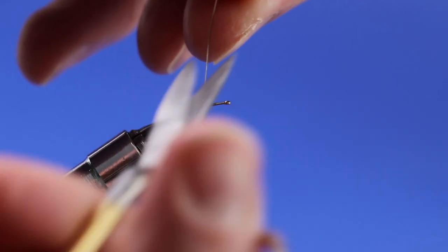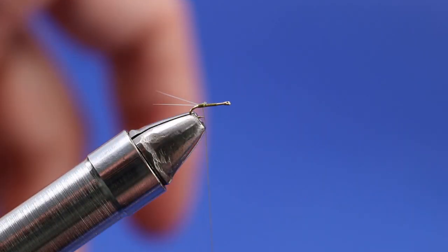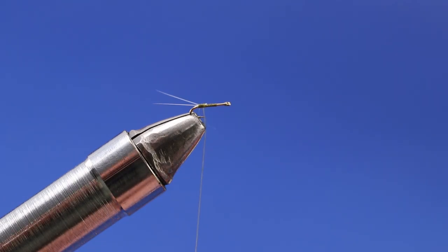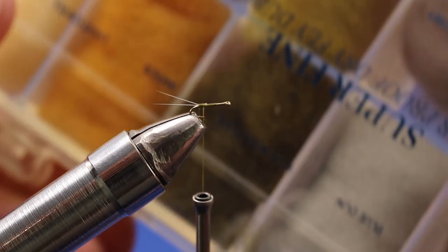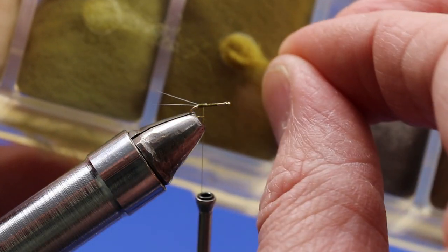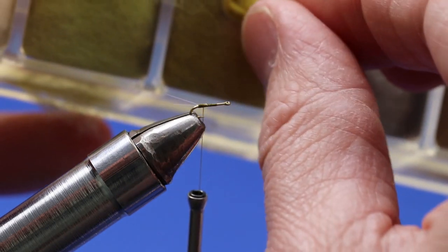Once you've given it a couple turns, go ahead and trim that tag end as well as the rest of the tail fiber off. Now it's time to dub the abdomen. For this I'm going to go with some superfine dubbing in olive, and I'm just going to grab the littlest pinch here.